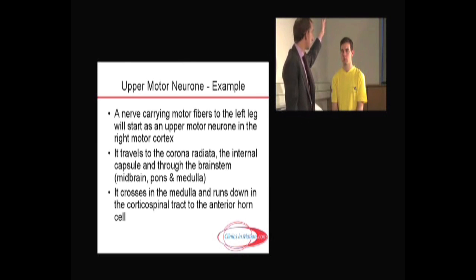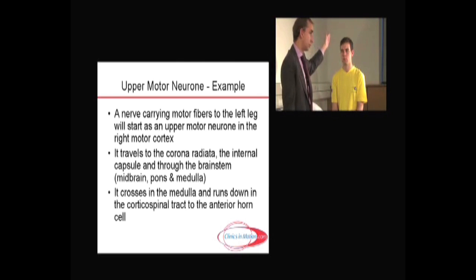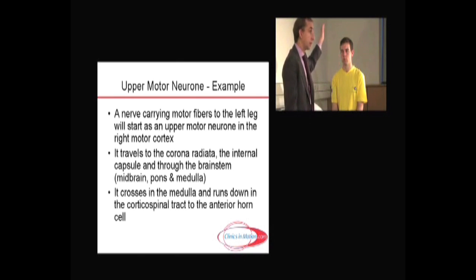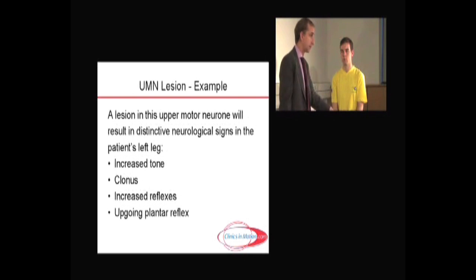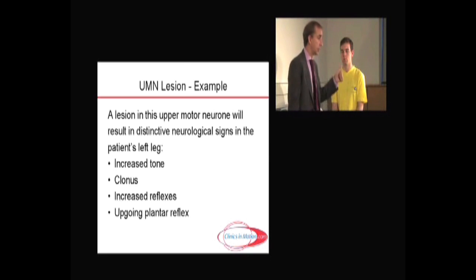The motor tract runs from the motor cortex on his right side, for example, to his left leg — through the corona radiata, through the internal capsule, through the midbrain, pons, medulla. It crosses in the medulla and runs down in the understandably named corticospinal tract, down to the anterior horn cell. That's the upper motor neuron to his leg. Thus, if he has a lesion anywhere along that tract, his left leg will show increased tone, clonus, increased reflexes, and an up-going plantar.